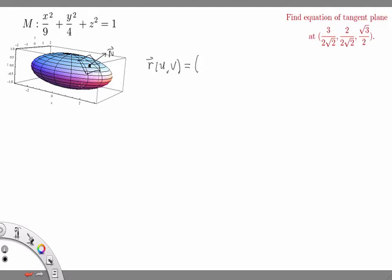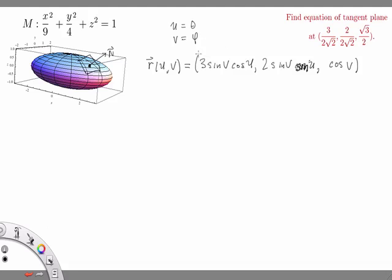The parameterization is essentially this: it's a sphere scaled in the X direction by a factor of three and in the Y direction by a factor of two. So we're basically going to use spherical coordinates to get the parameterization, but then scale the X coordinate by a factor of three — so three sine of V cosine of U — and scale the Y coordinate by a factor of two — two sine V sine of U. This should be sine of U. And then the Z factor isn't scaled at all, so it's just cosine of V. U is essentially theta and V is essentially phi in spherical coordinates.